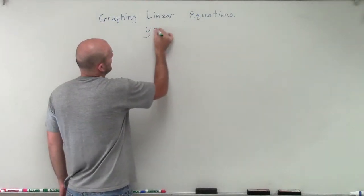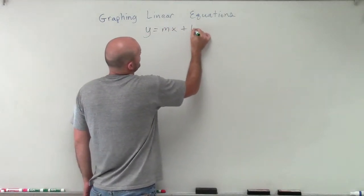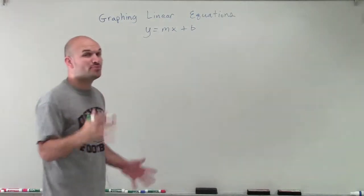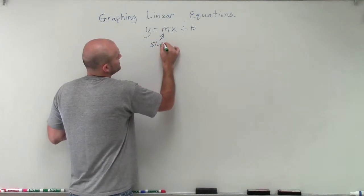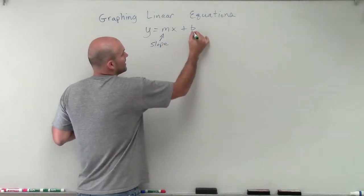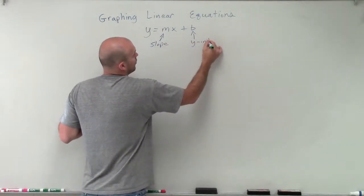Slope-intercept form looks like this: y equals mx plus b. Now it's very important for us to remember in slope-intercept form that m represents our slope and b represents our y-intercept.